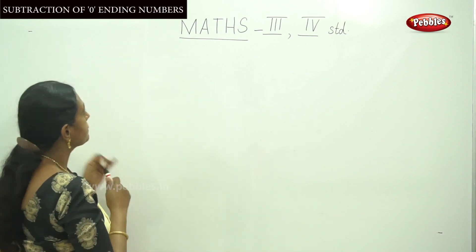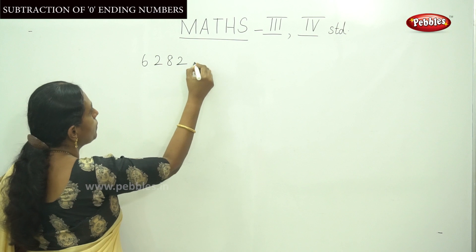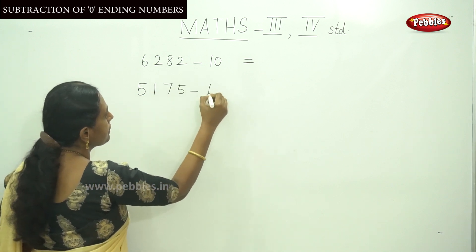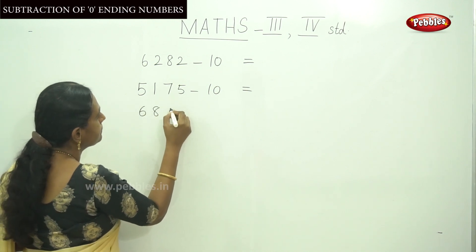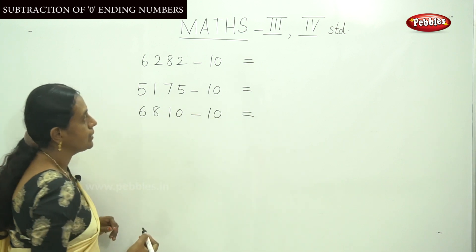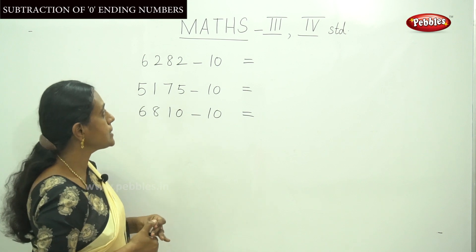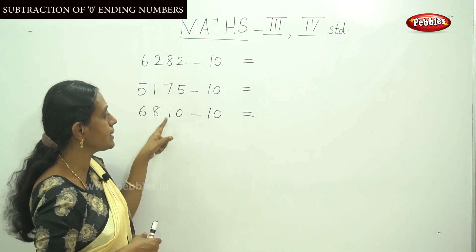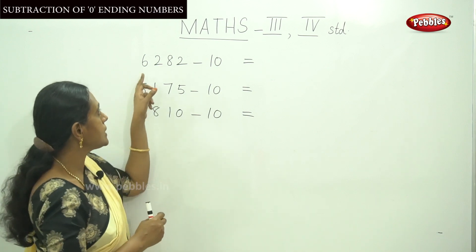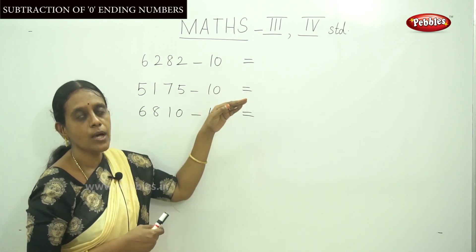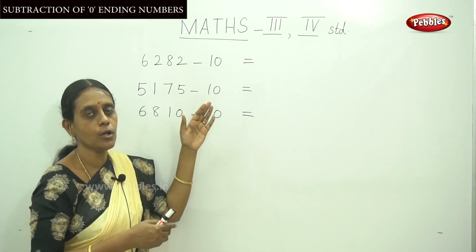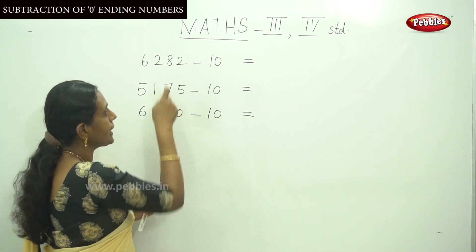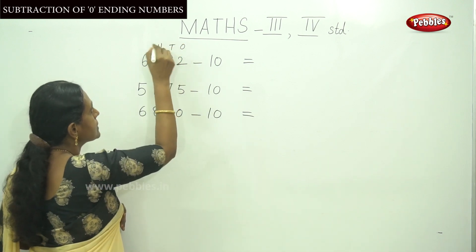Let me do that. Here we have 6282 minus 10, and another number 5175 minus 10, and also 6810 minus 10. All these numbers are being subtracted by 10, so you should focus on the tens place number only. No need to subtract ones, tens, hundreds, and thousands columns using regrouping or any other previous technique.